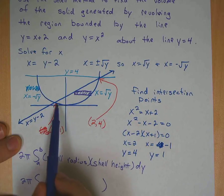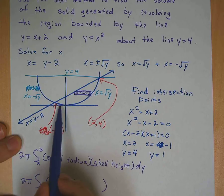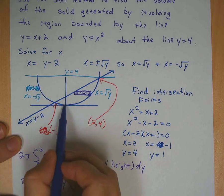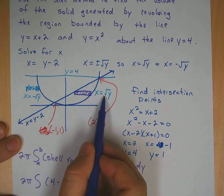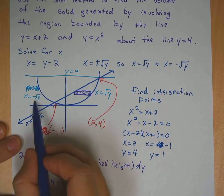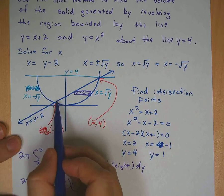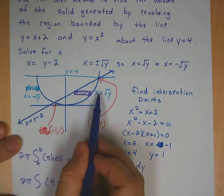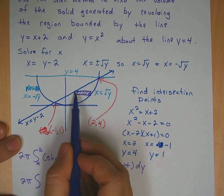Here you can see that the top and bottom of this are the equations x equals square root of y and this equation, x equals y minus 2. But if you move the shell down here, you'll see that this line is no longer the bottom. This line is the bottom. So we're going to have to split this up into two different integrals.